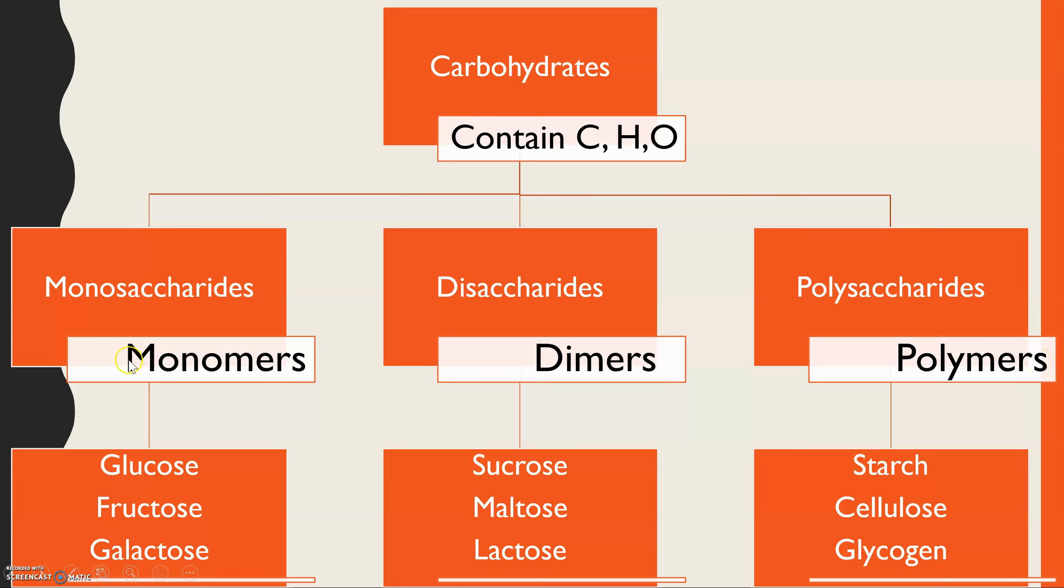So we call the monomers monosaccharides. The dimers, which are two, are disaccharides. And the polymers are polysaccharides. And there's three examples in each of these groups that you need to know for the AQA exam board. For the monosaccharides, it's glucose, fructose, and galactose. So that's definitely something worth making a note of this lesson.